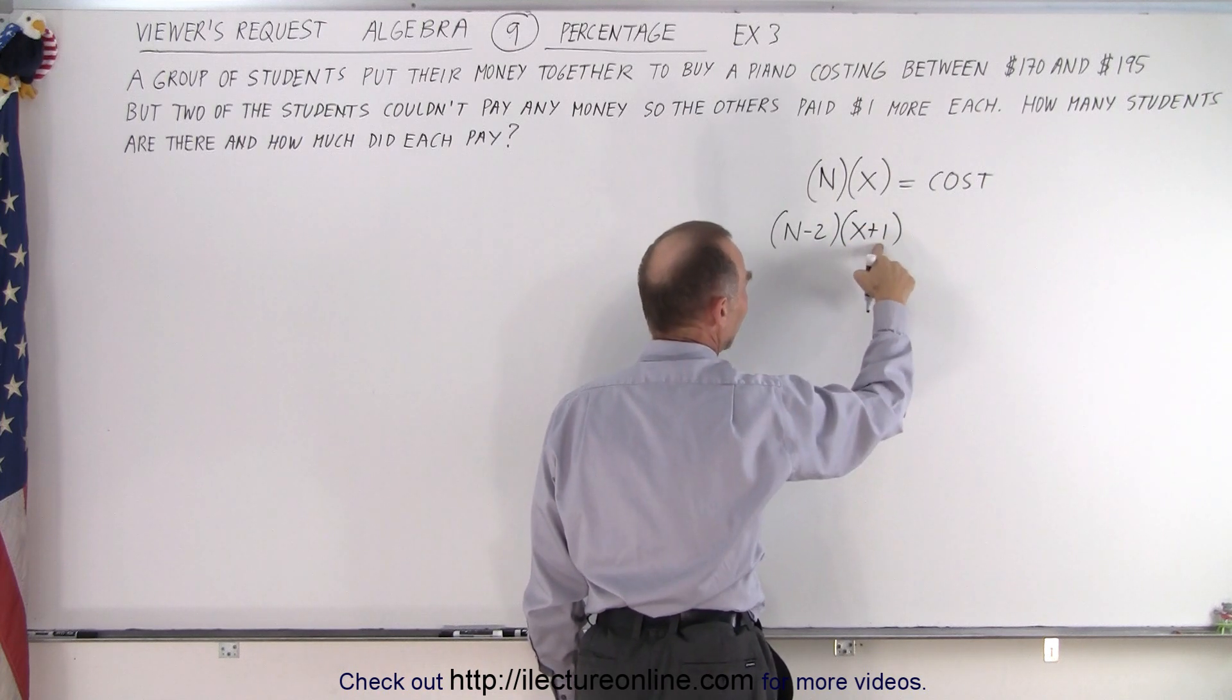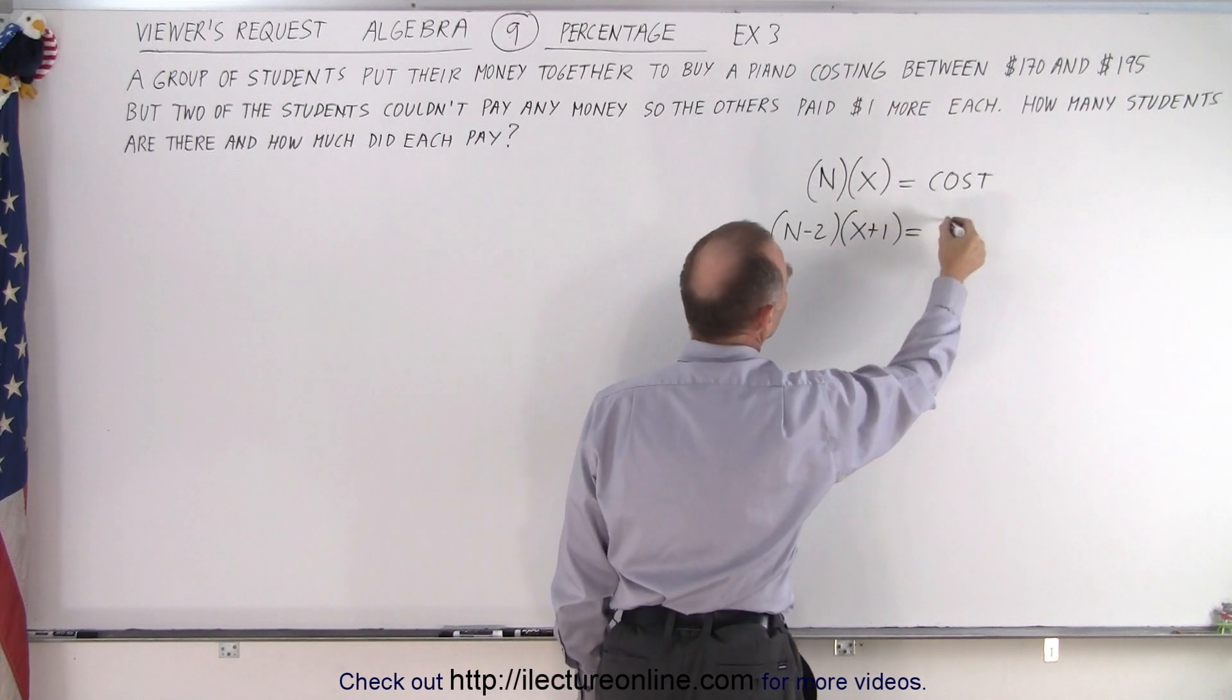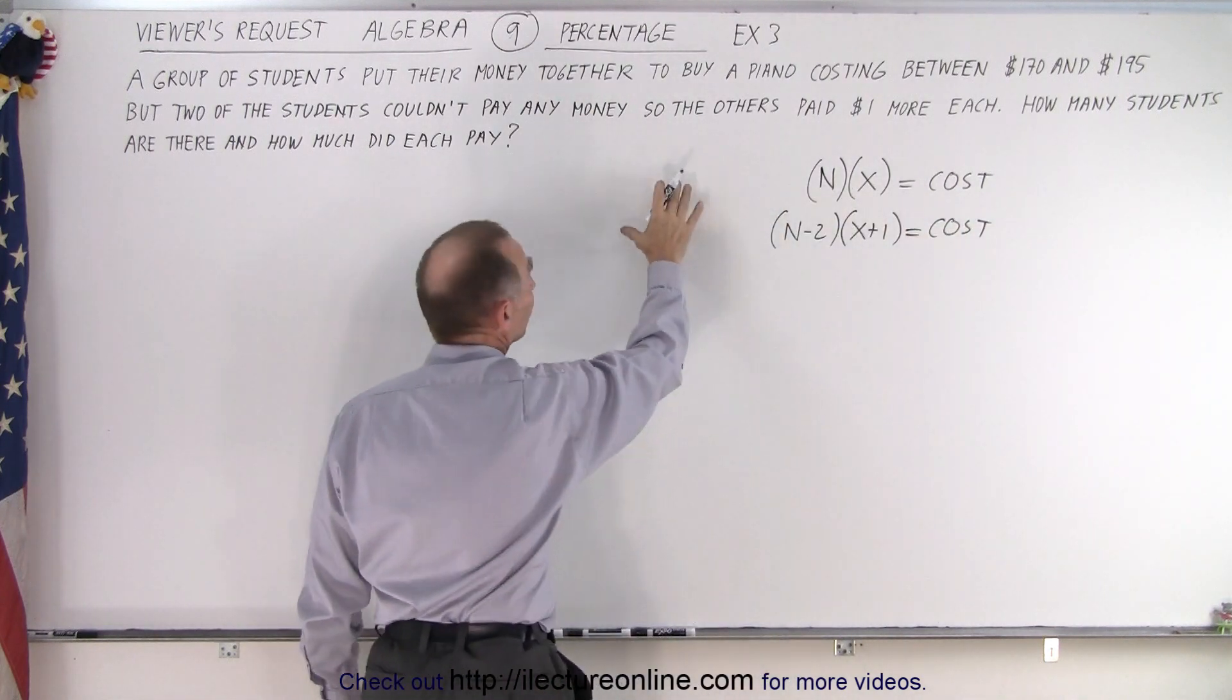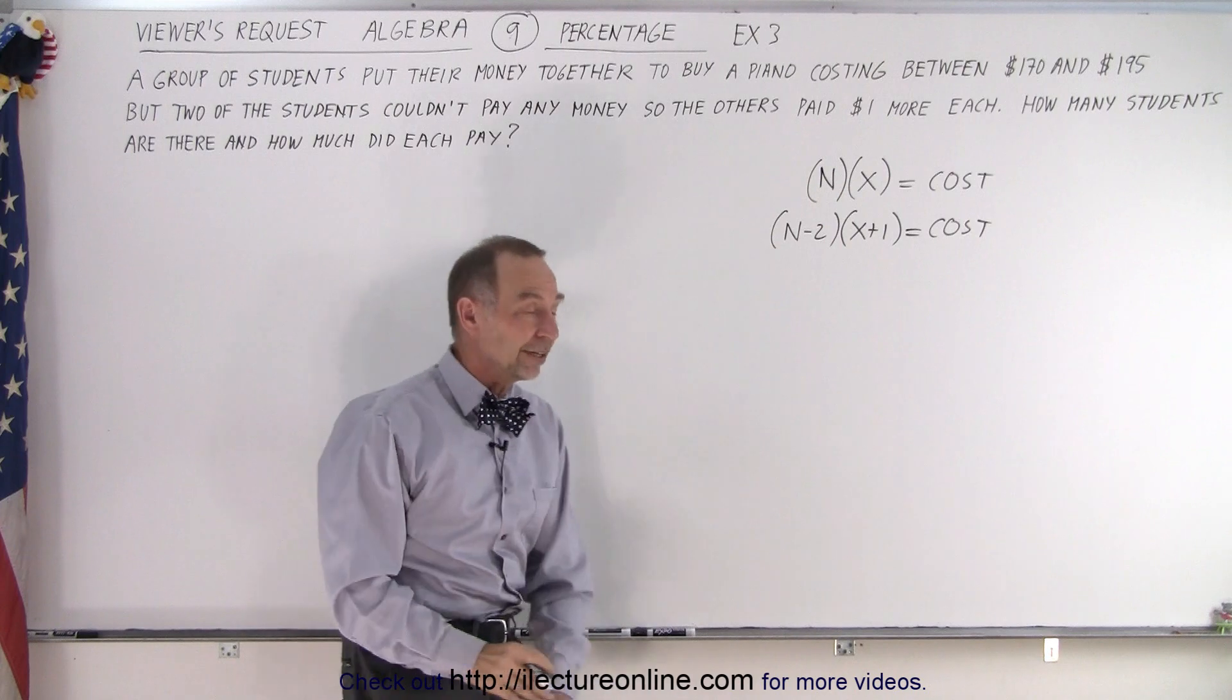So whatever they were going to pay, they each had to ante in an extra dollar, and that equaled the cost of the piano. And of course the cost is somewhere between $170 and $195.